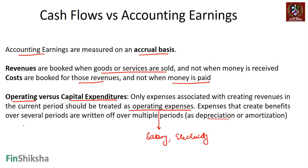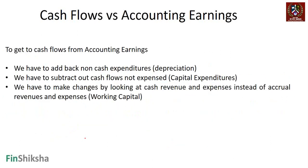Expenses that create revenue over several periods should be written off over multiple periods as depreciation or amortization. Examples include capital expenditures and license expenditures — for instance, telecom companies acquire licenses that are amortized over time, since a license is an intangible asset. This distinction between capital expenditure and operating expenditure is an important construct in our overall understanding.